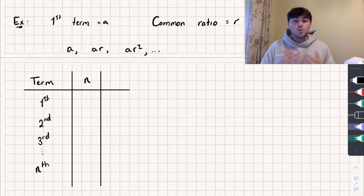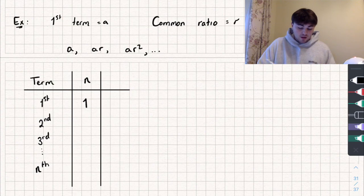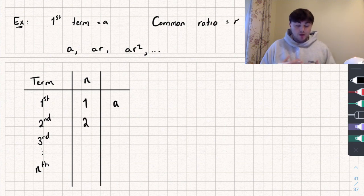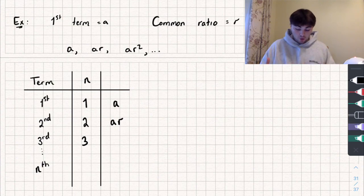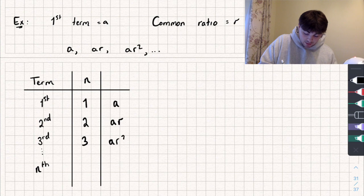And we know the first term, that's just a. For the second term, that's when n is going to be equal to 2, and that would be, well, the common ratio is r, so we're going to multiply the first term by r, and we get a times r, which is ar. For the third term, we're going to then take the second term and multiply it by r again. So ar multiplied by r gives me ar squared.